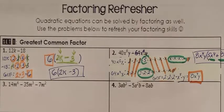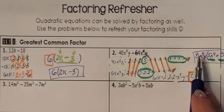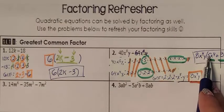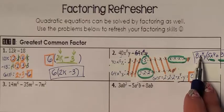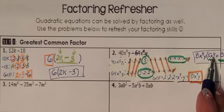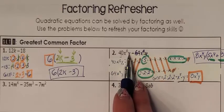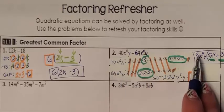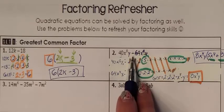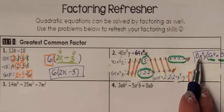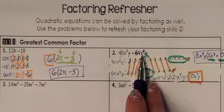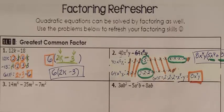Now we just need to check it. 8 times 5 was the original 40. X to the 4th times X to the 4th was X to the 8th, and then you have the Y — so term 1 checks out. 8 times 8 is 64, and the X to the 4th Y was the X to the 4th Y. So this is our GCF. There are 2 other problems here — I would like you to do them for independent practice.